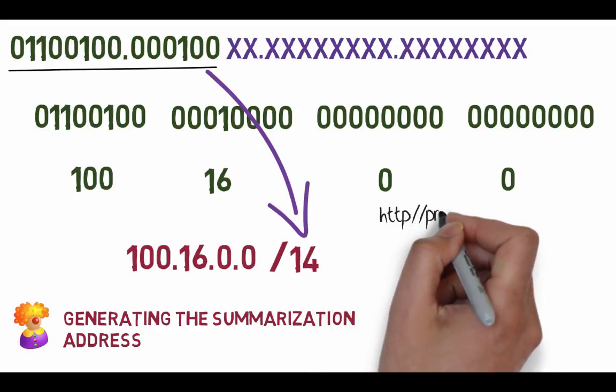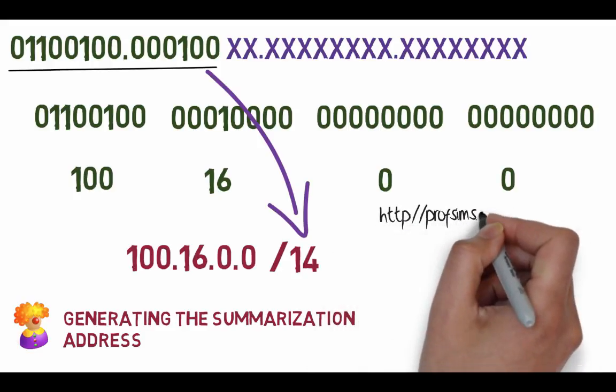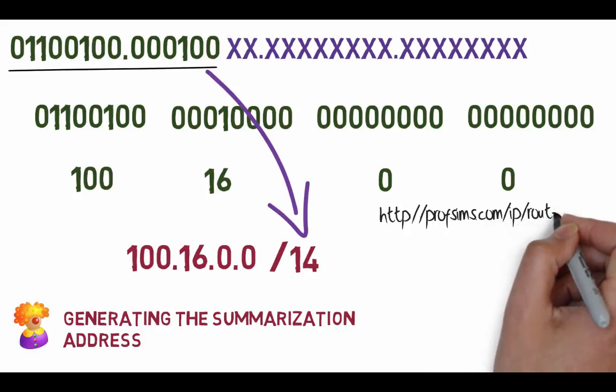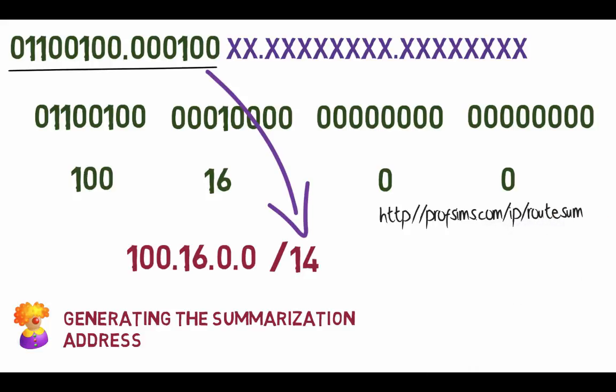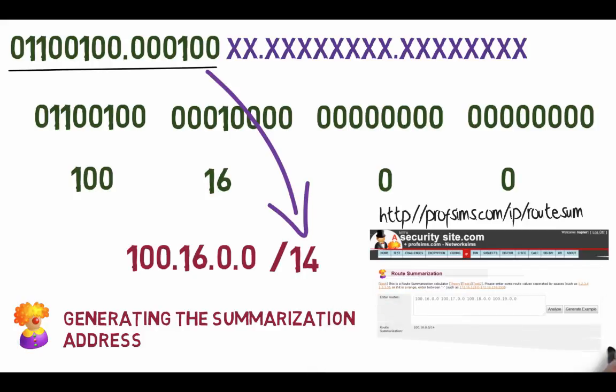If you want to see more examples, visit profsim.com — go to the IP route summarization section. There's a calculator you can use: enter individual addresses or a range of addresses and it will calculate the route summarization for you. That's a quick overview of route summarization.